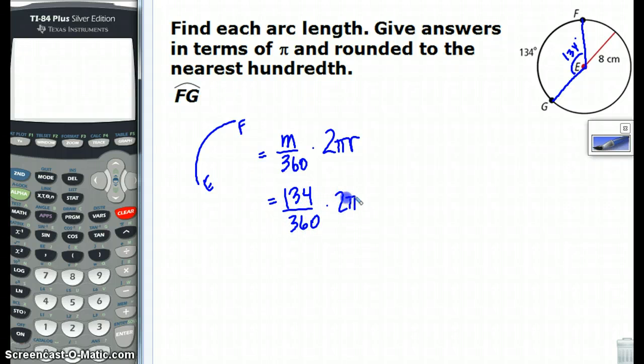times 2, times pi, times the radius, which in this case, the radius is 8, since that's 8 there, that one's 8, and that one's 8. They're all 8. All radii are the same there, in the same circle.